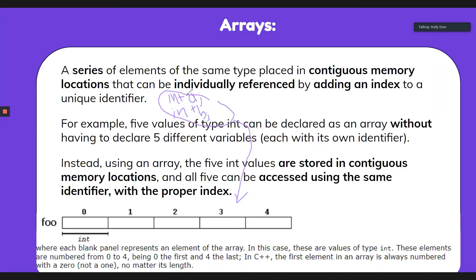Basically what an array does is store everything together so you don't have to create multiple instances of each type of variable — you put all your variables together. It's kind of like a perfect basket. Instead of making individual pockets or individual spaces for each variable, you combine all those spaces together into one big space available for everything.